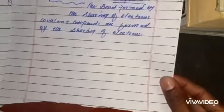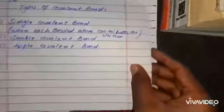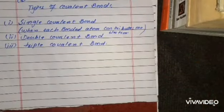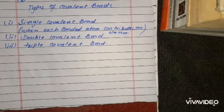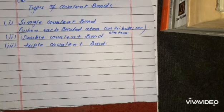We have here some kinds of covalent bond — the types of covalent bond. The single covalent bond: when each bonded atom contributes one electron, it forms a single covalent bond. The double covalent bond: when each bonded atom contributes two electrons, it forms a double covalent bond. The triple covalent bond: when each bonded atom contributes three electrons, it forms a triple covalent bond.